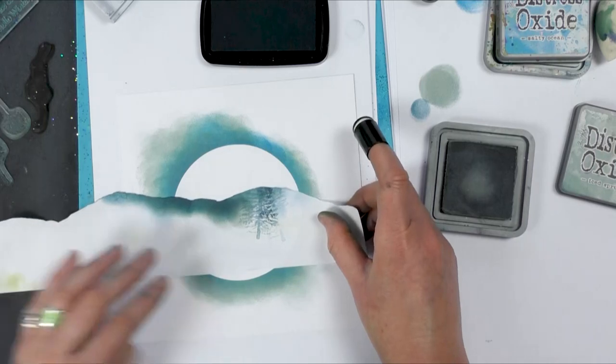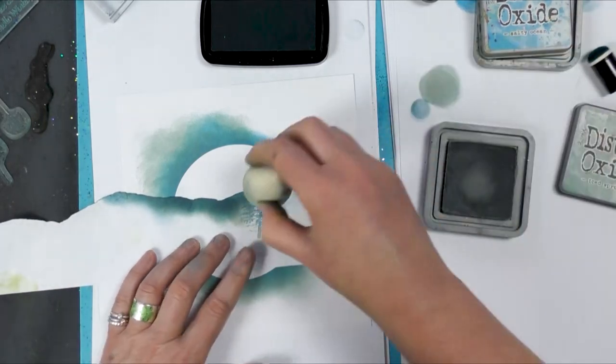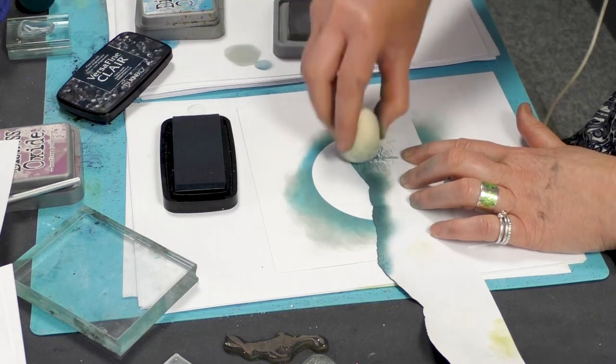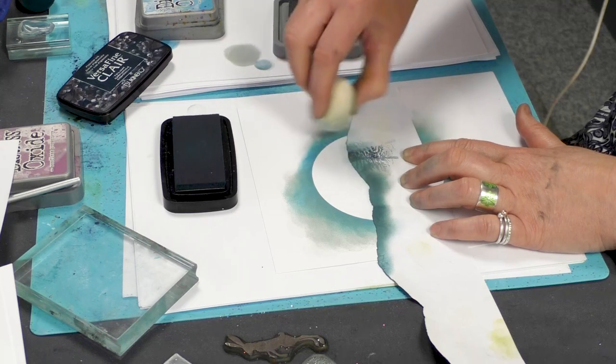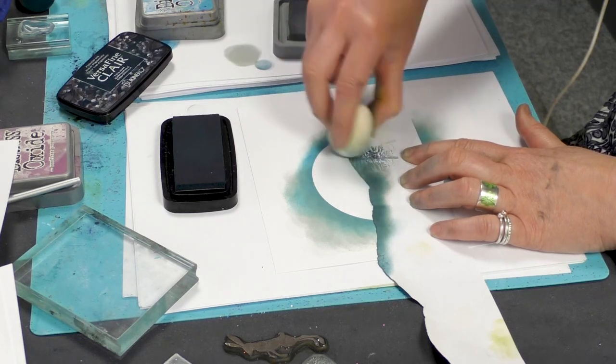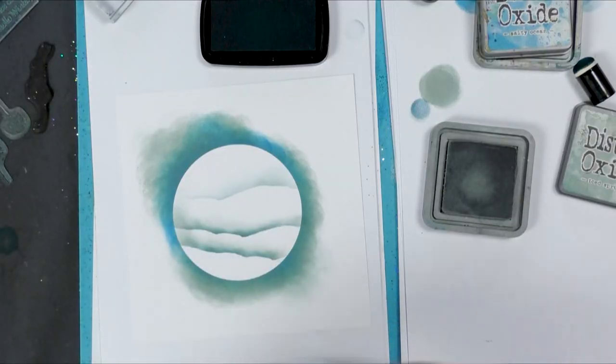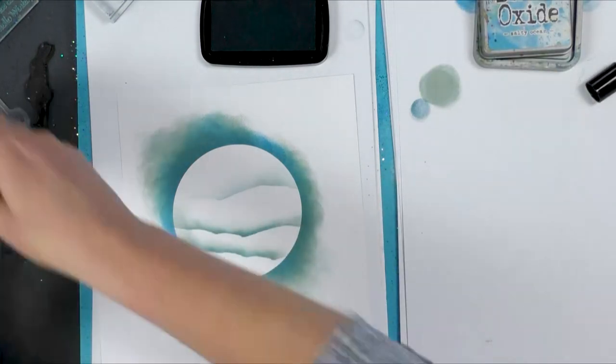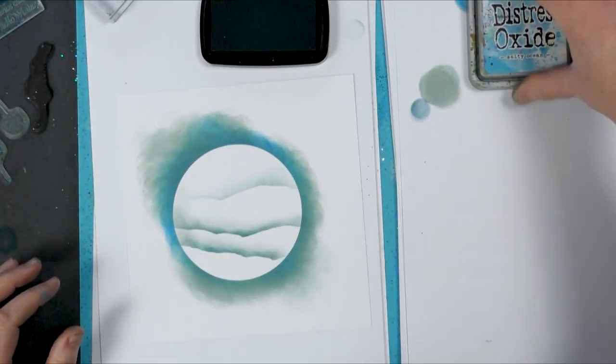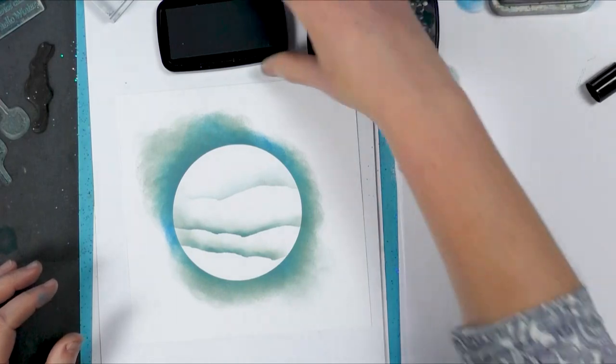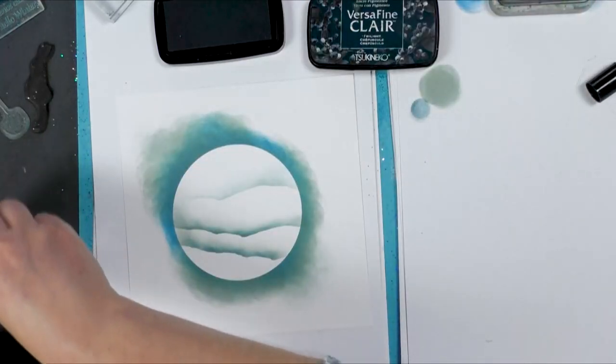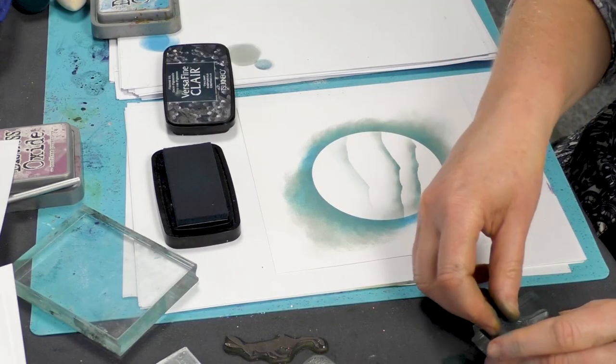And then I think I'm going to just do a faint one in the background. There we go. That's fine. Let's put the lids back on these. And we're going to use the twilight now and some little trees. We'll go back to our small trees.